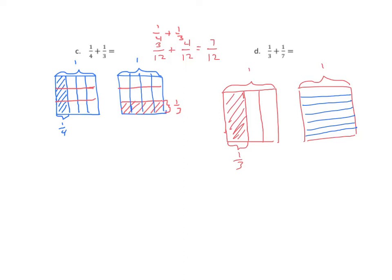Not too even, but they don't have to be perfect. One of those parts is shaded in, and we'll bracket that as one-seventh. Now, just like with the previous problem, we're going to put six horizontal lines in the first rectangular model, partitioning it seven ways. We have three times seven, so our denominator is twenty-one. So we'll rewrite: one-third plus one-seventh equals something over twenty-one.